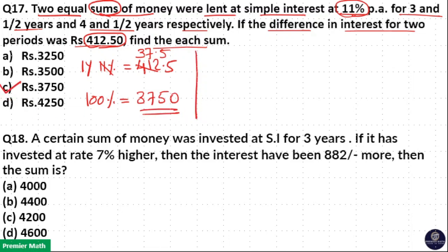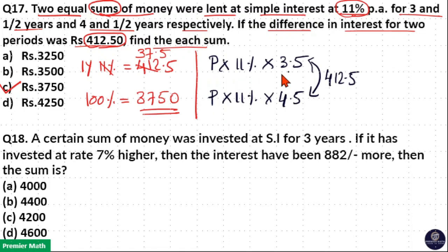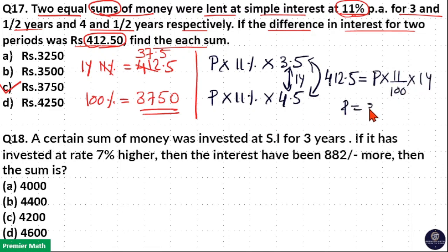If you have difficulties doing this, you can directly apply the formula. Let us consider the sum or principal as P. The difference in interest received between principal P at 11% per annum for 3.5 years and principal P at 11% per annum for 4.5 years is equal to 412.5 rupees. Since principal and rate are common, only the number of years varies — the difference is 1 year. So for 1 year, 412.5 is the interest received due to principal P at 11% per annum. Solving this gives P = 3750.